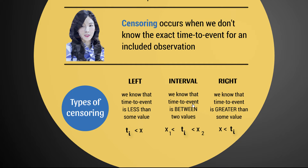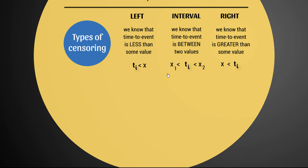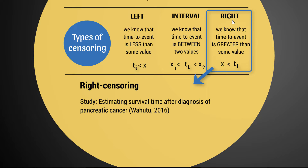Interval censoring is when we know that the time to event is between two values, but are not sure of the exact time. So it could be that we know this person died between two and three years from the cancer diagnosis — that would be interval censoring. The most common form is right censoring, where we know that the time to event is greater than some value. We know someone survived at least five years after their cancer diagnosis, but are unsure of when they died after that — so it has to be greater than five years.